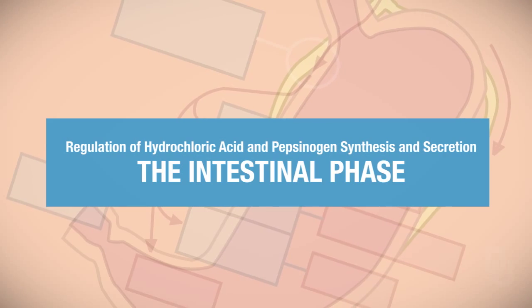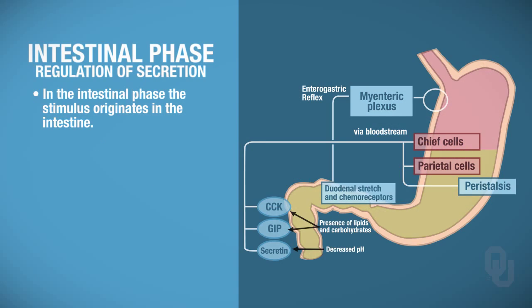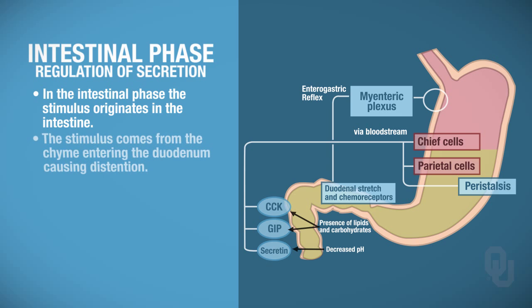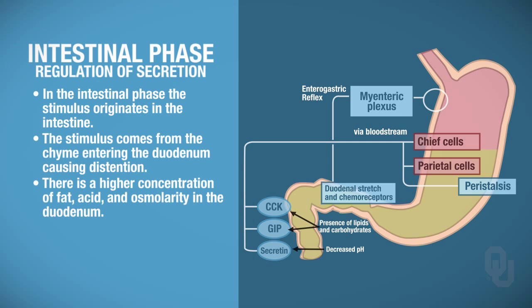Remember that in the intestinal phase, the stimulus originates in the intestine. The stimulus here is where the chyme enters the duodenum. Along with that, you get distention of the duodenum, a higher concentration of fat in the duodenum, a higher concentration of acid in the duodenum, and the osmolarity goes up as well. So all of these things are stimuli.